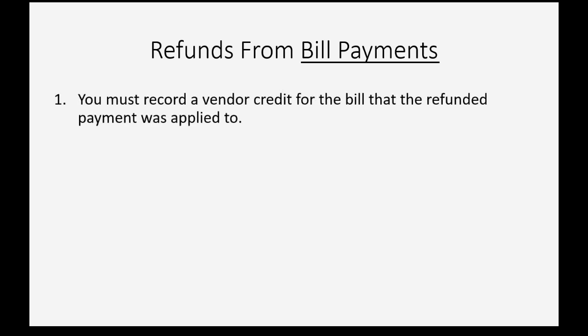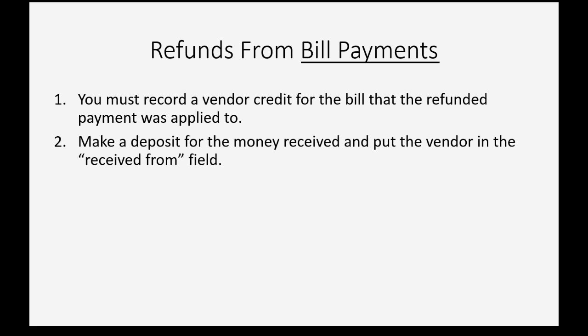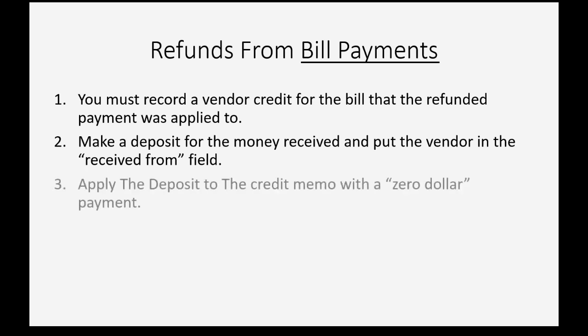There are three simple steps when recording a refund from a past bill payment. First, you must record a vendor credit for the bill that the refund payment was applied to. Secondly, you must make a deposit for the money received and put the vendor in the Received From field when you use the deposit window. And third, you must apply the deposit to the credit memo with a $0 payment.